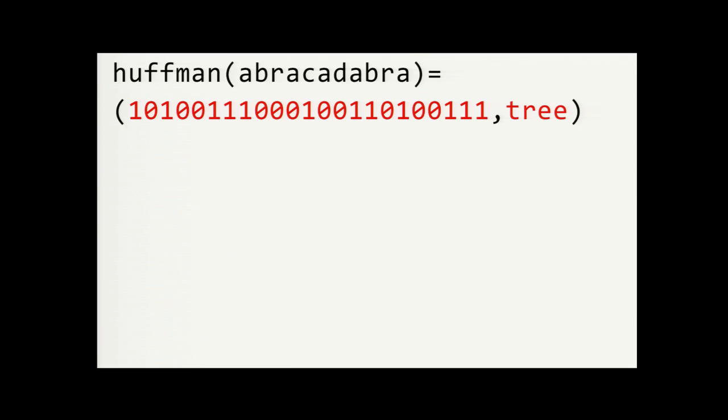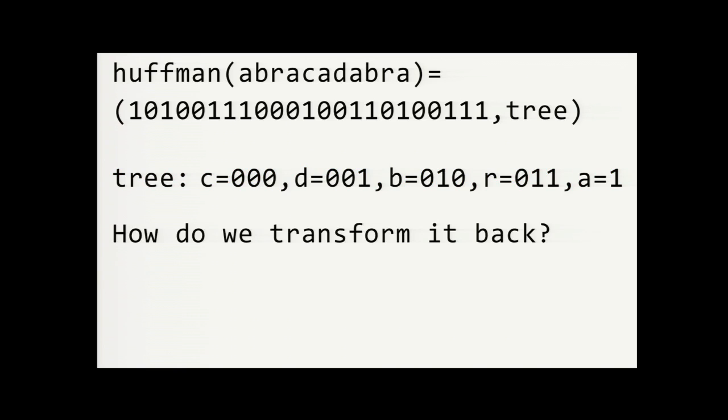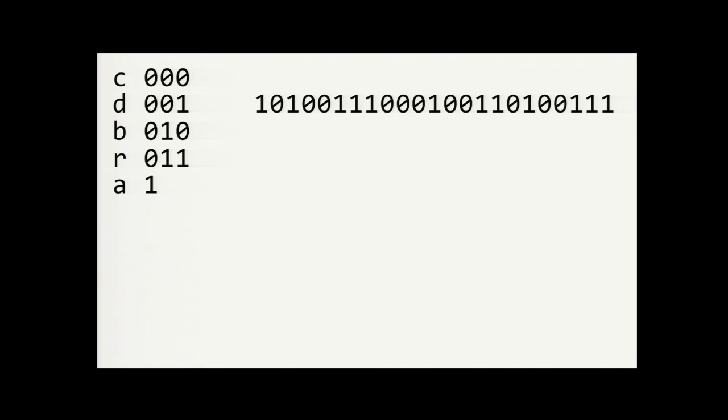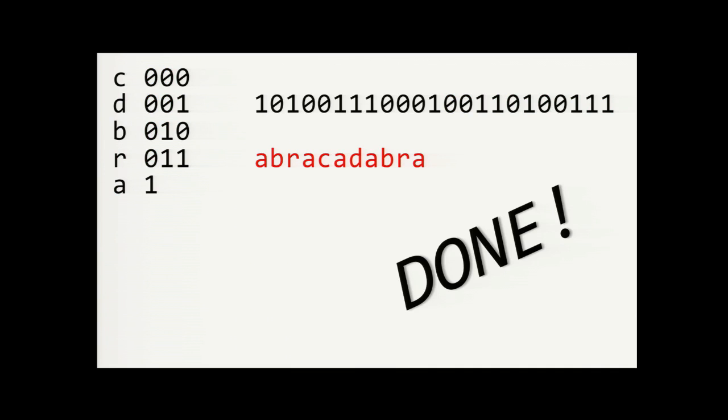So here's the Huffman coding for abracadabra. And note that we also need to include that binary Huffman code tree along with the output. And so how would we transform it back? We have our codes and we have our encoded data stream. And we just scan over the data stream bit by bit until we find a code that matches. So one matches A. Zero is ambiguous. Keep scanning. Zero, one, still ambiguous. But zero, one, zero matches B. So we know that that's the next symbol. Zero, one, one matches R. One is A again. Zero, zero, zero C and so on until we've decoded the entire data and we're done.